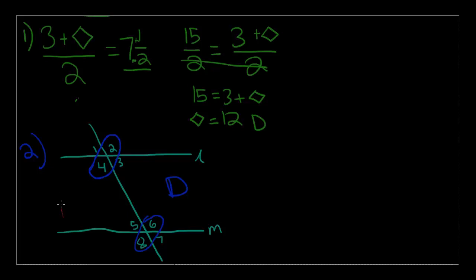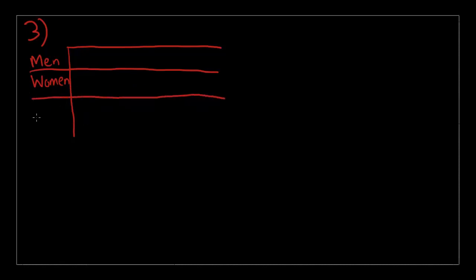So, let's go to number 3, which has a chart. Alright, so let's draw this chart really fast. Men, women, I can do better, then a total, then employed, I'm just going to write M for this, unemployed, and total again.